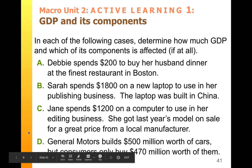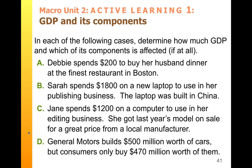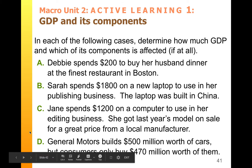For your first act of learning, you have four situations. In each of these situations, tell me if this particular purchase is included in gross domestic product for the United States. If so, how much of the money goes to GDP and which category — C, I, G, or NX. Be prepared to explain your answers.